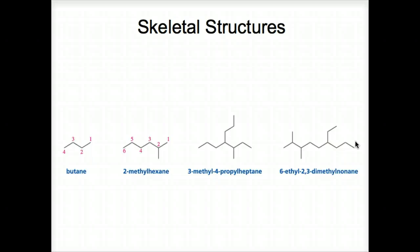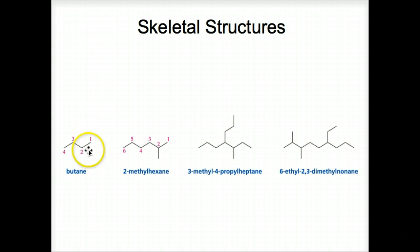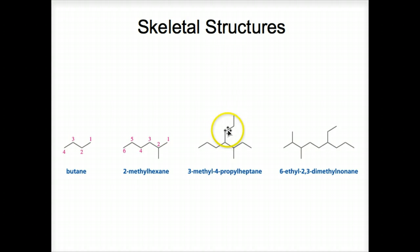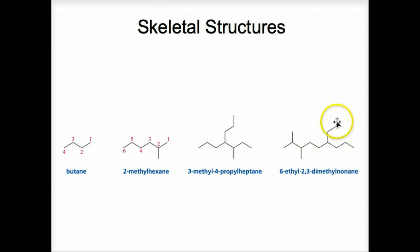Here are skeletal structures we've been looking at recently. Here's butane — one, two, three, four carbons; each end of a line is a carbon. Here's 2-methylhexane, where we have a methyl group off of carbon number two of this six-carbon chain. And this one has more substituents — a methyl group off of number three and a propyl group off of number four, with the longest chain being heptane, a seven-carbon chain. And here you can see 6-ethyl-2,3-dimethylnonane.